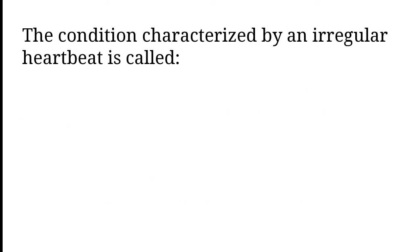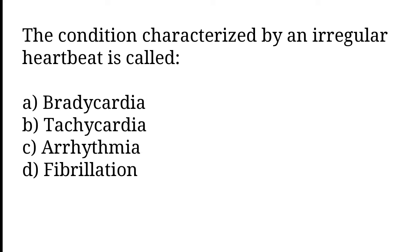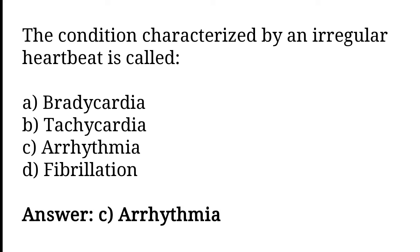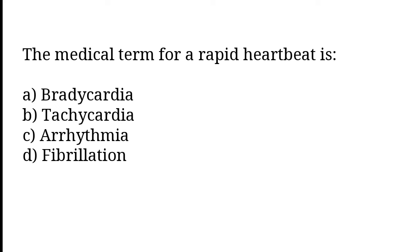The condition characterized by an irregular heartbeat is called: bradycardia, tachycardia, arrhythmia, fibrillation. So the correct answer is option C. Arrhythmia.